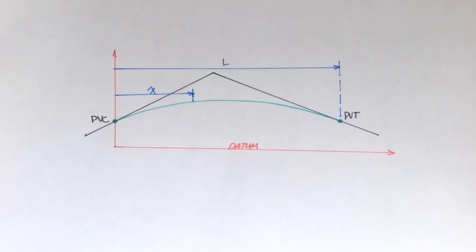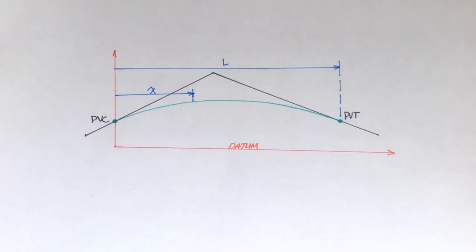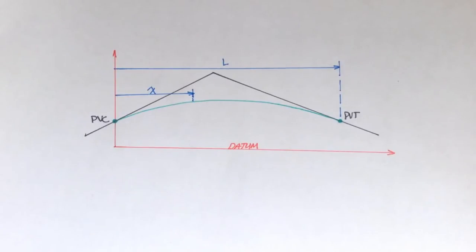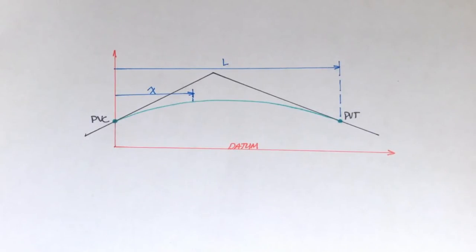Vertical curves are really just a part of a parabola, or they form an arc of a parabola. They're pretty well adapted and suited for vertical curves because they provide a more gradual change in direction. Elevations and stations and all that sort of stuff are easily computed using vertical curves because we have an equation.